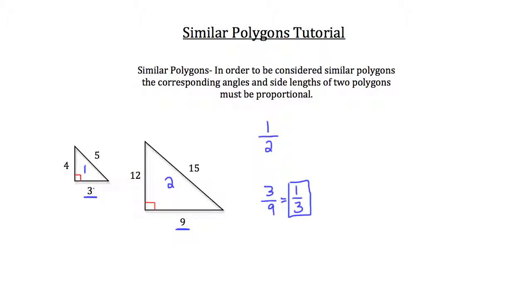Now, if all three sides of both these right triangles have the same proportion, 1 over 3, then these two triangles would be considered similar. Let's take a look at the left leg of both of these right triangles.